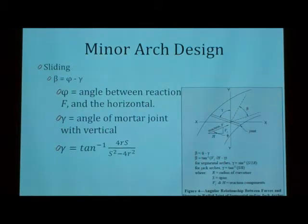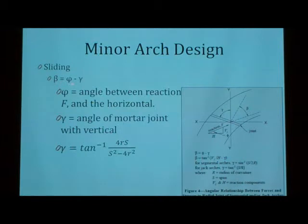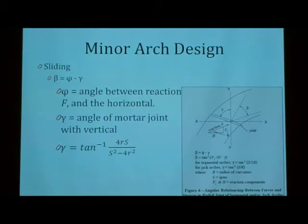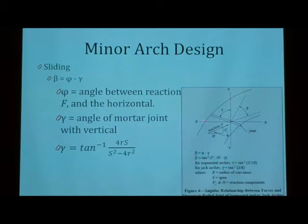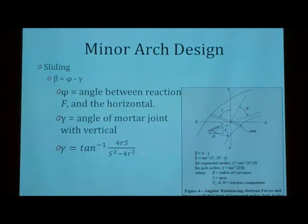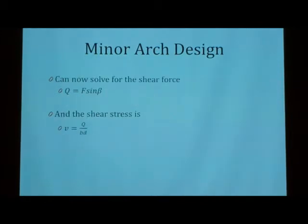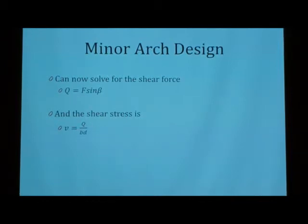So, I'm going to talk a little bit about sliding. Basically, sliding happens if your angles are too high. And you have beta equals phi minus gamma. As it says, phi is the angle between the reaction force and the horizontal, or the thrust force. And gamma is the angle of the mortar joint with the vertical, which is shown right there. And you can calculate gamma using this equation. If it is a general equation, and if it's a segmental arch, it's going to be the sine inverse of S over 2R. So, once you know all the limits, you can actually solve for the shear force in the structure, and the shear stress. This is the equation that gives you the shear stress, and that will be used.